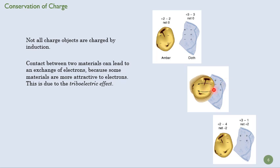Here, they're going to be more attracted to this amber blob here than to the cloth. And so when we separate them, the amber is going to have a more negative charge and the cloth will have a positive charge. Now, note the charge has been conserved. This one has a negative two charge. This has a plus two charge. So the overall charge is still zero.